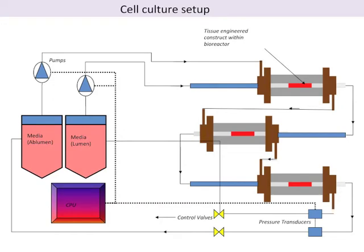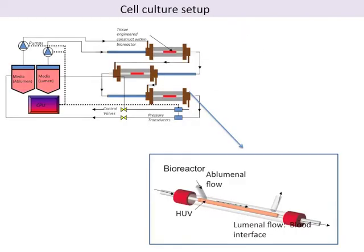Three bioreactors were connected in series, with two flow circuits — lumen and ablumen — with respect to medium reservoirs and rotary pumps.